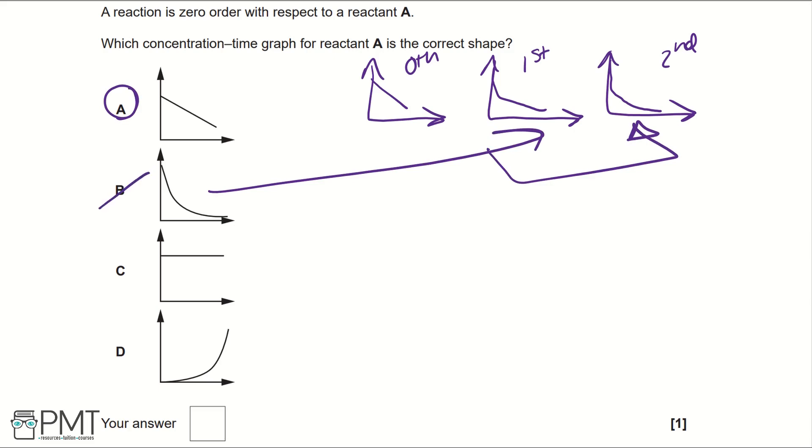C is a zero order reaction for a rate concentration graph. So a lot of people when answering this question might have the misconception and put C, but it's not.